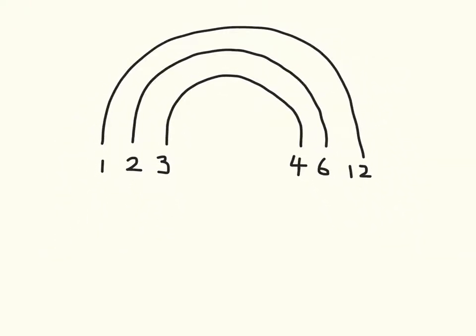So if we're going to list those properly, we can list the factors of 12. We have 1, 2, 3, 4, 6, and 12.